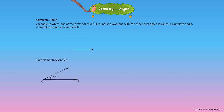Complementary angles: If the sum of two angles equals 90 degrees, they are said to be complementary angles. Angles PQR and XYZ together measure 90 degrees, so we say that the angle 30 degrees is the complement of the angle 60 degrees. Angle Y is complementary to angle Q and vice versa.